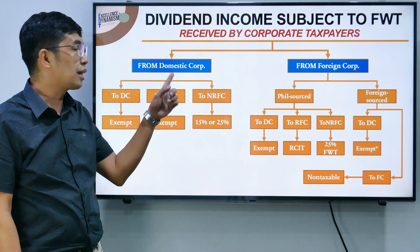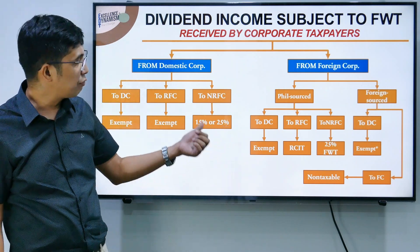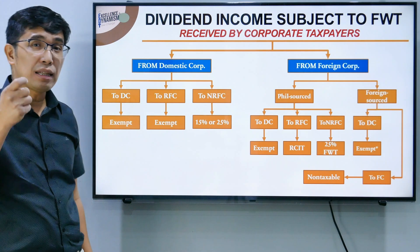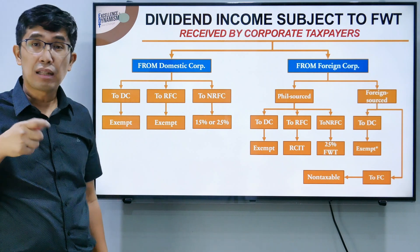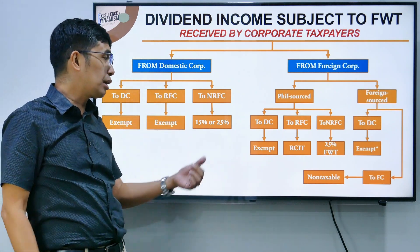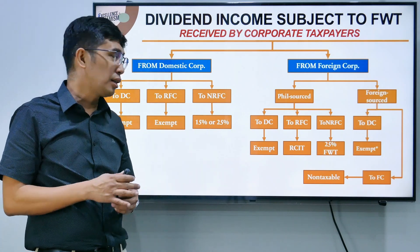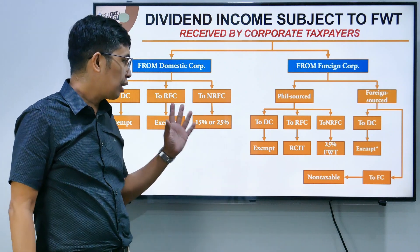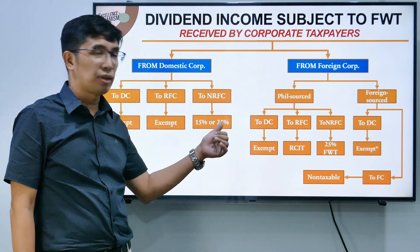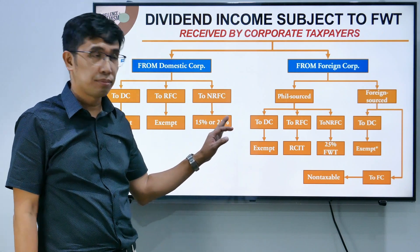However, if the dividend is from a domestic corporation going to a non-resident foreign corporation (NRFC), the tax rate is either 15% or 25%. When is it 15%? If there is a tax sparing rule — meaning the tax paid here is allowed as a credit in their country, or their country does not impose tax on dividends received from a domestic corporation. If there is no tax sparing, the rate is 25%.